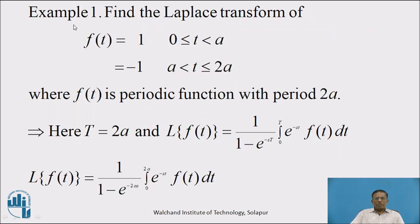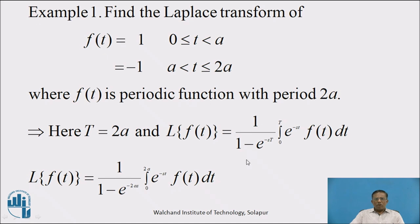Let us consider Example 1. Find the Laplace Transform of function f(t) defined as f(t) = 1 for 0 ≤ t < a, and f(t) = −1 for a < t ≤ 2a, where f(t) is a periodic function with period 2a. Therefore, we denote T = 2a and use the formula of Laplace Transform of periodic function: 1 upon (1 minus e raised to minus sT) into integration with limit 0 to T of e raised to minus st times f(t) dt.